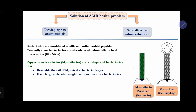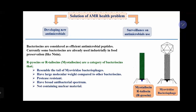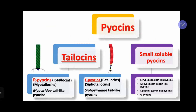R-pyocins have a large molecular weight compared to regular bacteriocins. They are also protease-resistant — they cannot be digested by protease enzymes. They possess a broad antibacterial spectrum, they don't contain any nuclear material, and they can be engineered through modification of the genes, including the tail fibers. Pyocins are produced by Pseudomonas aeruginosa. There are two main categories: tailocins and small soluble pyocins. The tailocins are called R-pyocins, the subject of today's study, and F-pyocins, which are similar to the siphoviral bacteriophage.